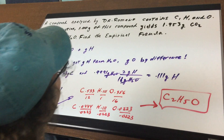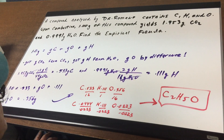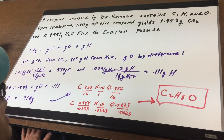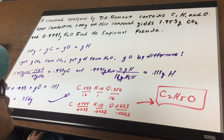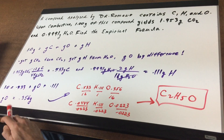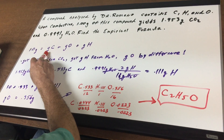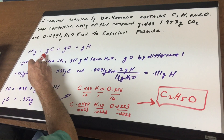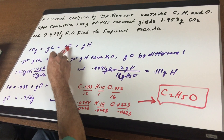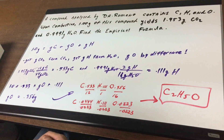The empirical formula is the simplest formula. For the DAT exam the numbers will be much nicer, so as long as you know the concept you're going to be good to go. We know that one gram of this compound includes C, H, and O — so one gram equals the grams of carbon plus the grams of oxygen plus the grams of hydrogen.